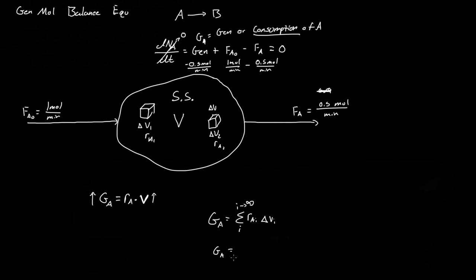So the generation GA is now equal to the integral of RA dV over the volume V. Integrating the reaction rate over the volume gives us the generation or consumption of A. Our final general mole balance equation is: dNA/dt = integral of RA dV + FA0 minus FA.